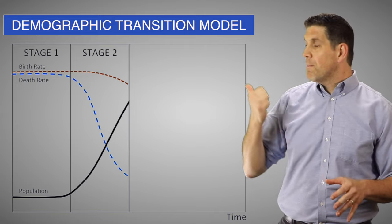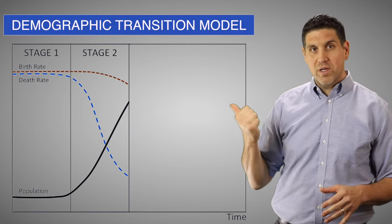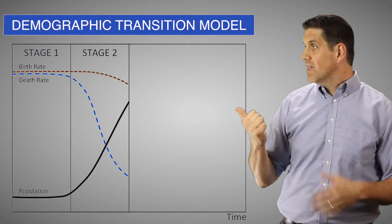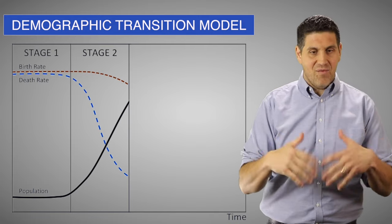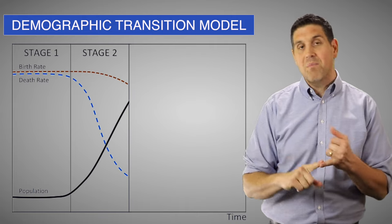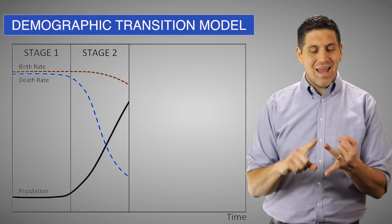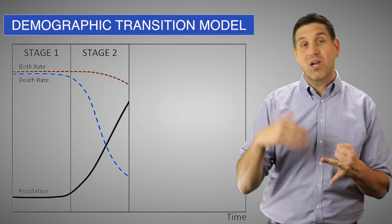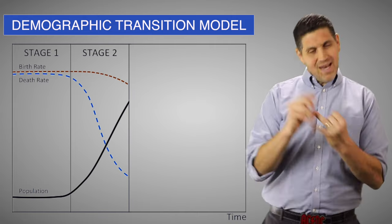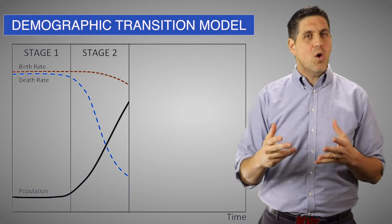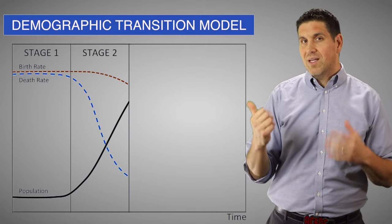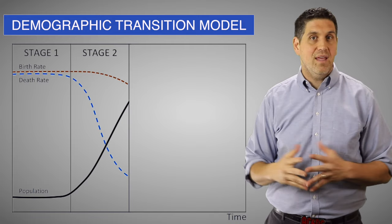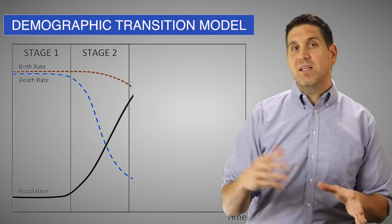But notice that the birth rate didn't really start to fall, because a lot of families felt an economic need to have more kids to farm the land, and they didn't realize that a lot of their children were actually going to reach adulthood. In other words, they didn't know that the death rate was falling, so they continued to have a lot of kids.